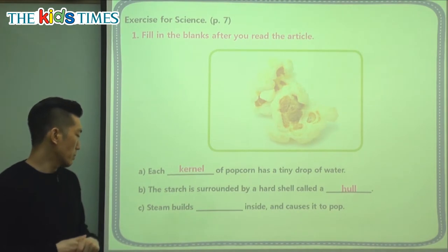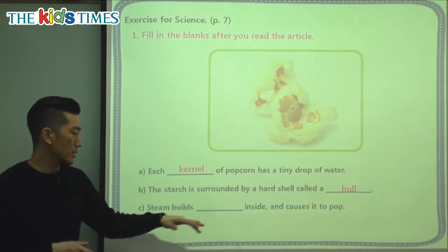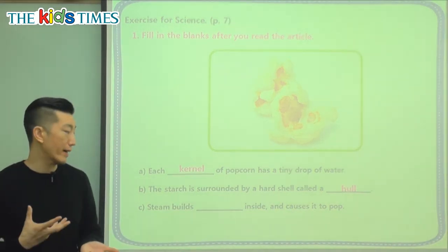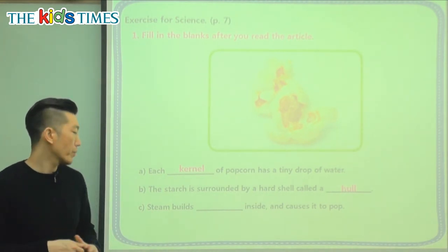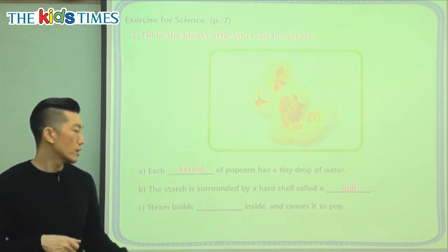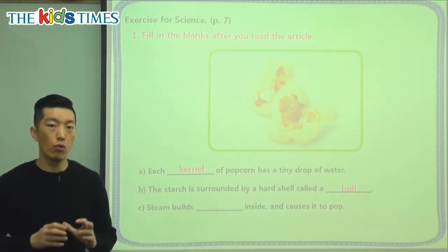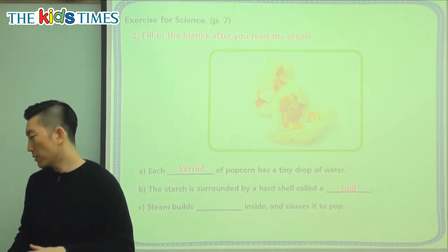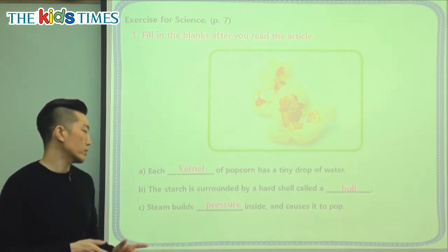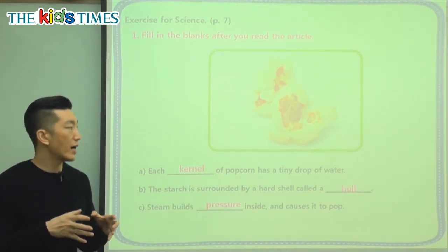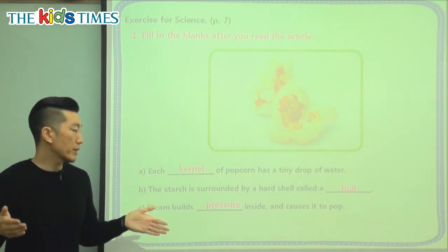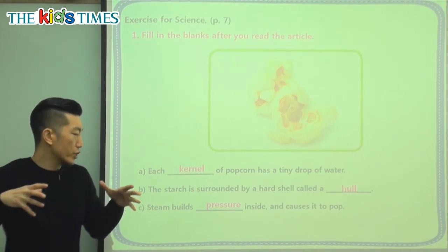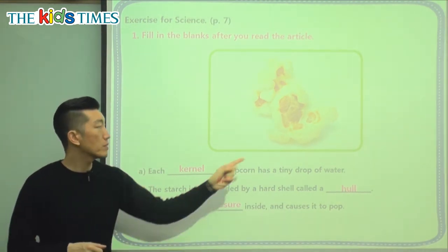Let's look at the last fill-in-the-blank. It says: steam builds blank inside and causes it to pop. Steam is when water turns into gas, usually because it's getting very hot. It builds — meaning it gets larger and larger — something inside and causes it to pop. What is it that makes the kernel pop? It's a lot of something pushing, and that's called pressure. When steam builds, things start expanding or getting bigger, and because it has a covering of starch and hull, when there's a lot of pressure, it can't hold it anymore and it pops into a popcorn.